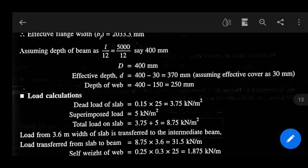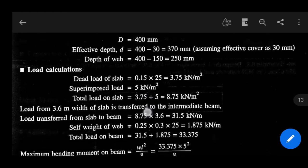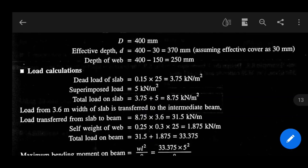Now load from 3.6 meter width of slab is transferred to the intermediate beam. Now load transferred from slab to the intermediate beam equals 8.75 into 3.6, which equals 31.5 kilo Newton per meter. And self weight of web equals 0.25 into 0.3 into 25, that means the depth of web. That equals 1.875 kilo Newton per meter.